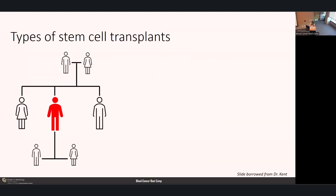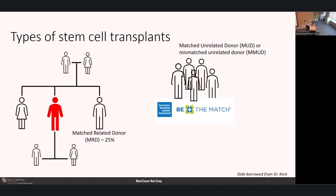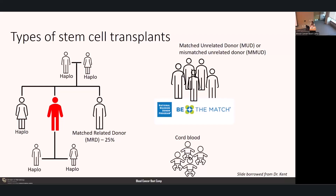Looking at types of stem cell transplants: the chance of finding a matched-related donor is our first choice, but there's only a 25% chance in patients who have siblings. Next, we typically look at a matched or mismatched unrelated donor through the Be the Match bone marrow registry. Another possible source is cord blood—blood derived from the placenta and umbilical cord at birth, with a large bank available for transplant centers. If none of these are a good option, haploidentical donors are pretty readily available.